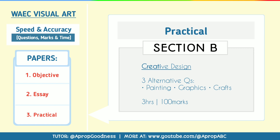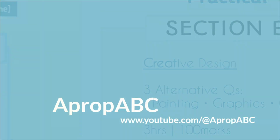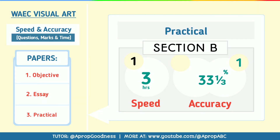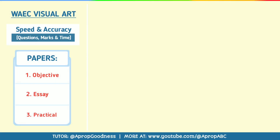For paper 3B, which is creative design, you will actually be given the question two weeks before the examination. For creative design, you'll be required to pick from three alternatives — you can decide to paint, or pick something on crafts, among others. It requires three hours and you'll be given 100 marks. For the speed and accuracy test, three hours are required for this particular question, and for accuracy you get 33.33%. For more videos like this, check the card you can see on the screen right now.